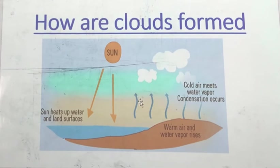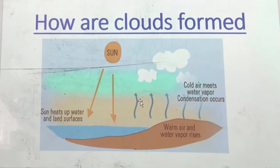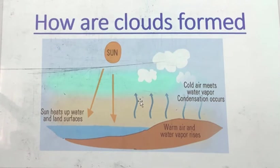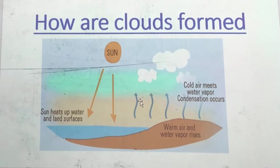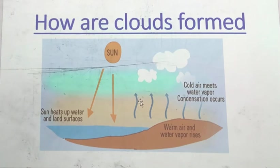Some animals that live in the water are the frogs, the duck, the fish, starfish, sea turtle, jellyfish, squid, octopus, seahorse, crab, seal, flying fish, dolphins, whale, and shark. They all live in the water. They cannot survive out of the water.